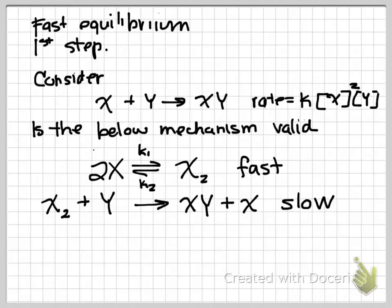So I'm showing here a reaction of X plus Y goes to XY and it has an experimental rate. Make sure you know that these rates are found experimentally. The rate law was shown to be second order in X and first order in Y. The question at hand is to know if the below mechanism is valid.